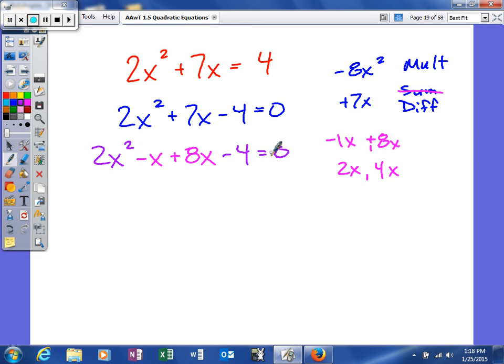Now we can factor by grouping. When you factor out your common factor of x, you get 2x minus 1. I'm going to factor something out of this to make it look identical to that. I think that's a positive 4.